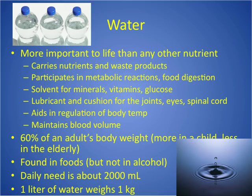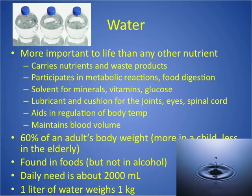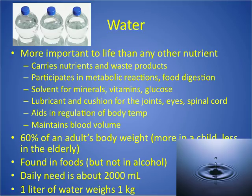Water is the primary fluid in the body — more important to life than any other nutrient. We can survive only a few days without water because almost all physiologic reactions occur only in a watery environment. Water delivers electrolytes and nutrients and carries away waste. It's a solvent, a lubricant, a cushion for our joints, and it helps regulate body temperature and maintain blood volume. Water balance is affected by age, gender, and muscle mass. Muscle has more water; fat cells have less. 60% of an adult's body weight is water — more in a child, less in the elderly.